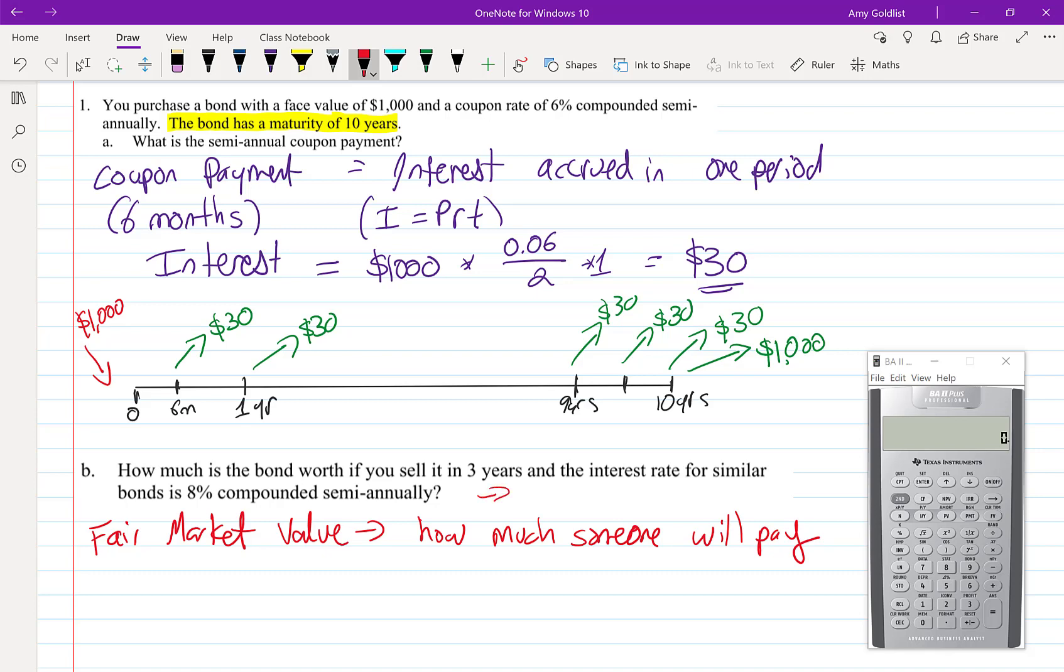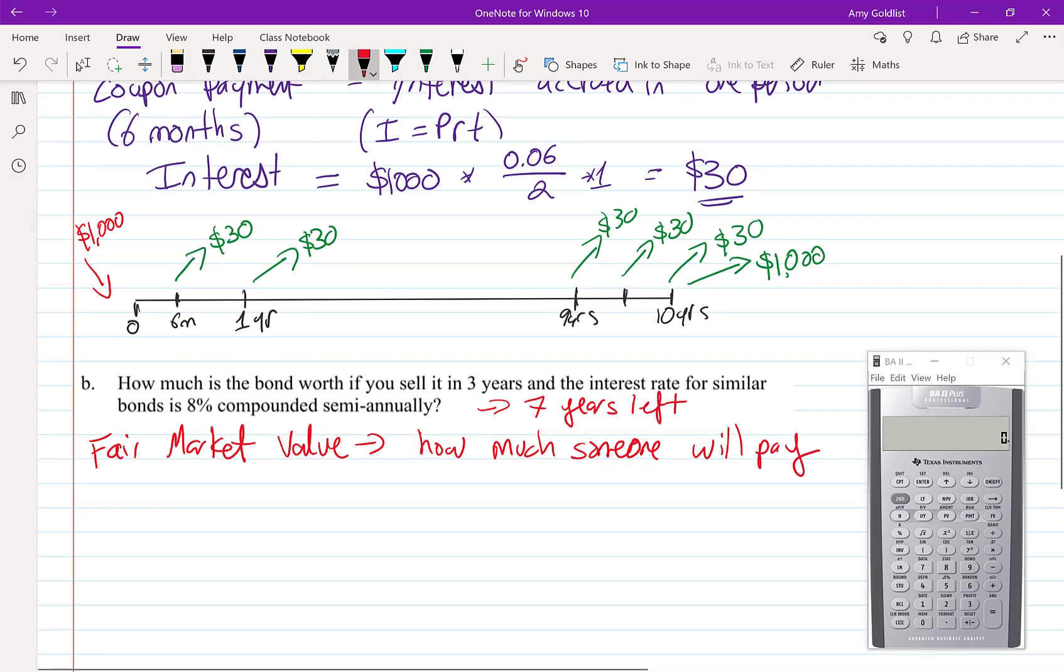So right now it's three years later, which means seven years are left. Anybody can go and buy a similar bond, the same type of bond, at 8%. So how much do you think somebody would pay for our bond, which is in fact at 6%? This is what we're going to be computing.